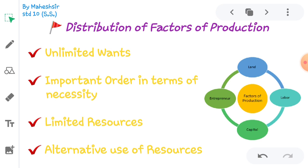There are four factors of production and there will always be scarcity of them — for example, land or raw materials may not be available. As a result, every country faces problems related to allocation of resources. There is always a limited amount available for which you can purchase your needs.